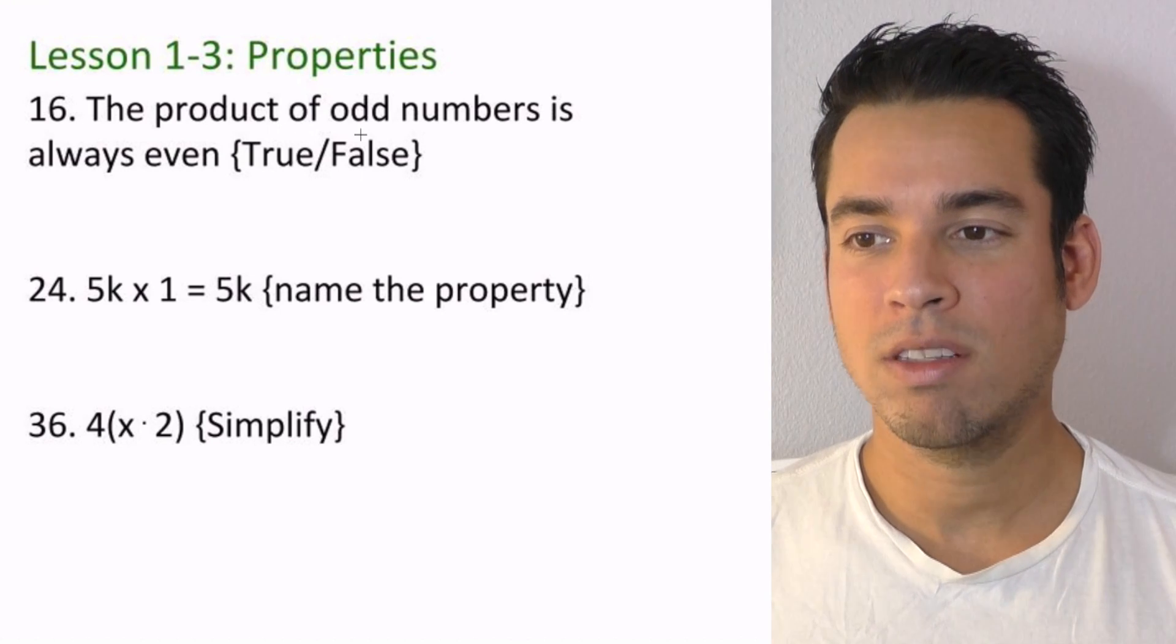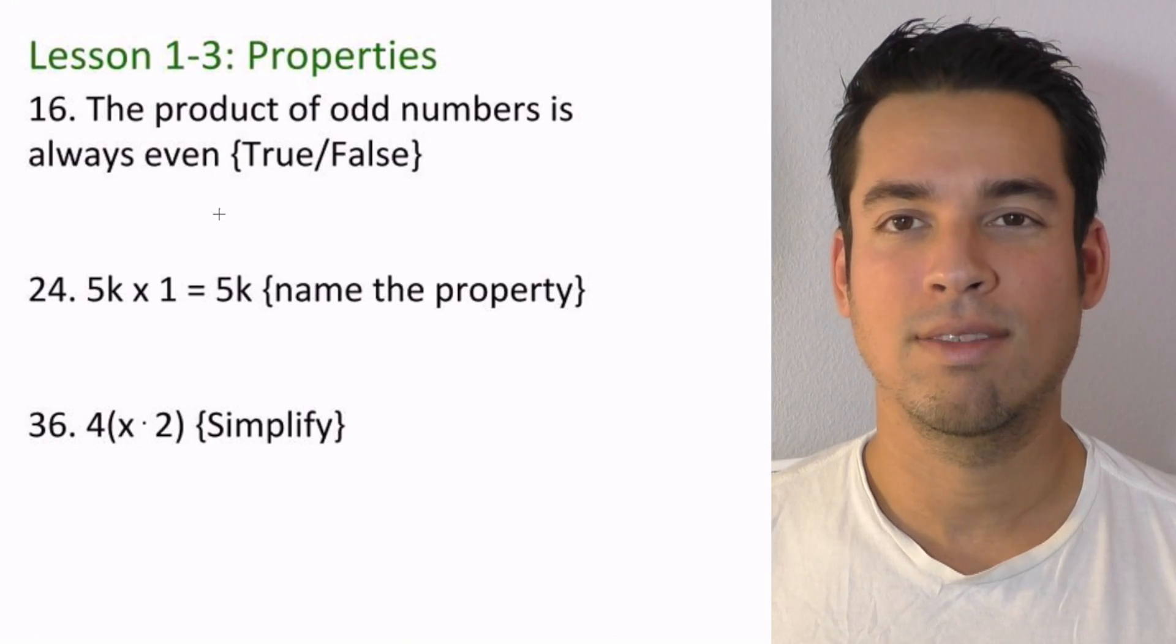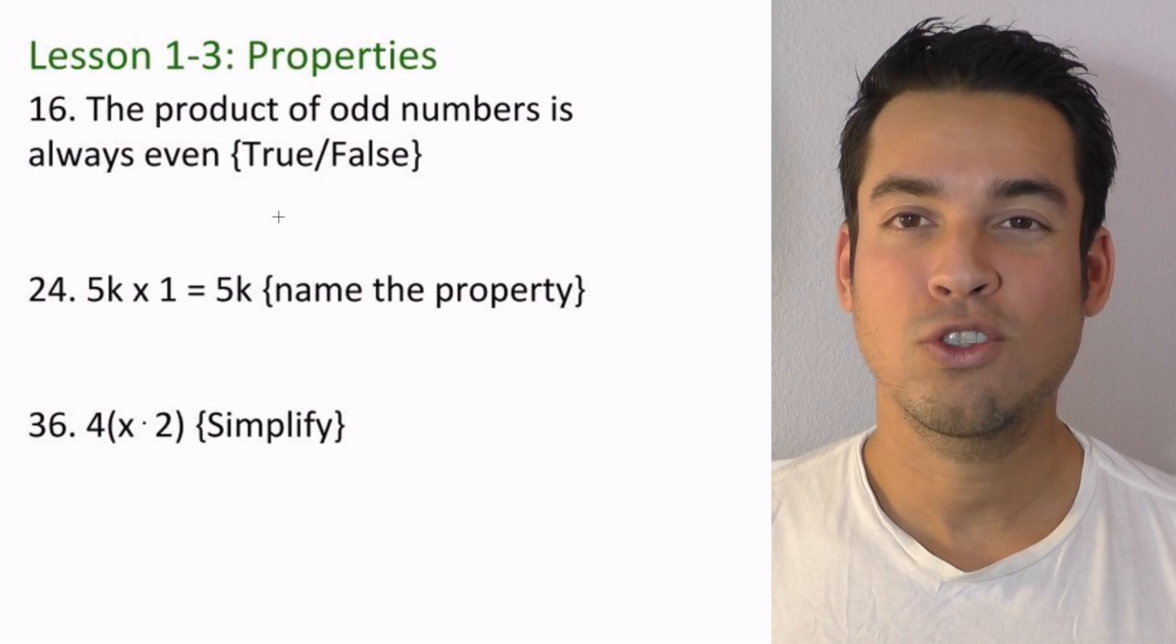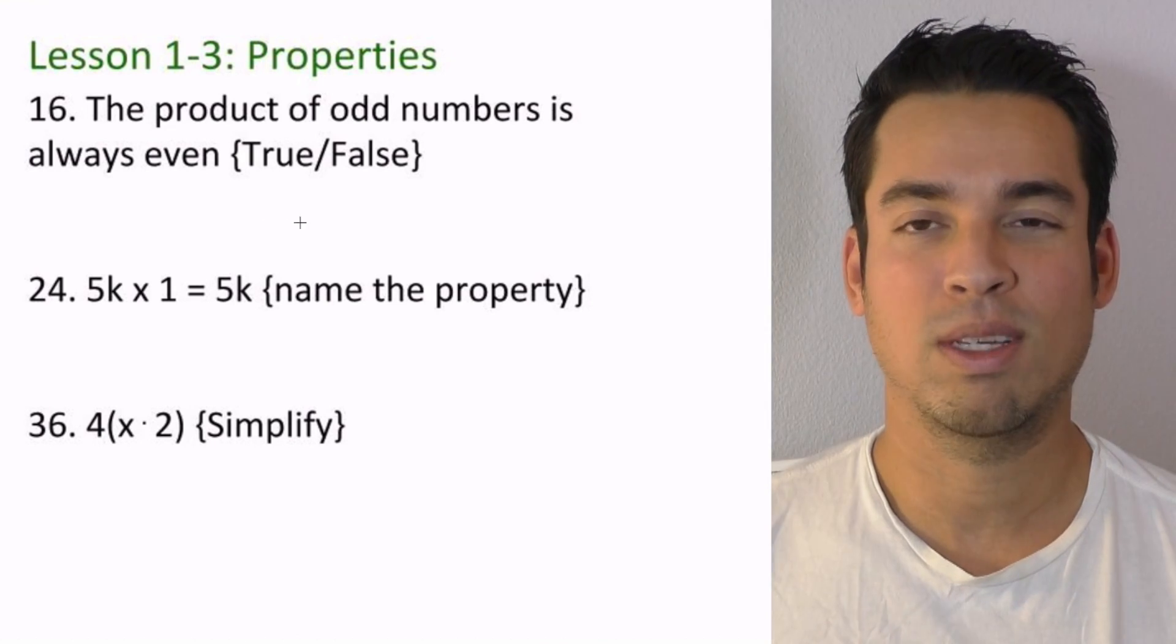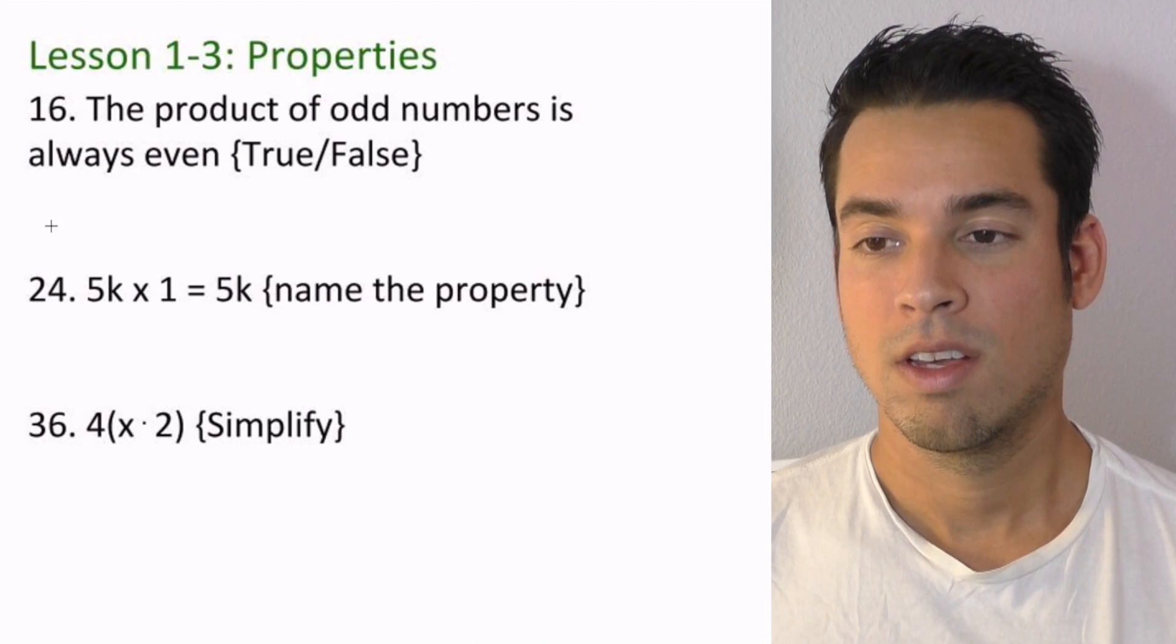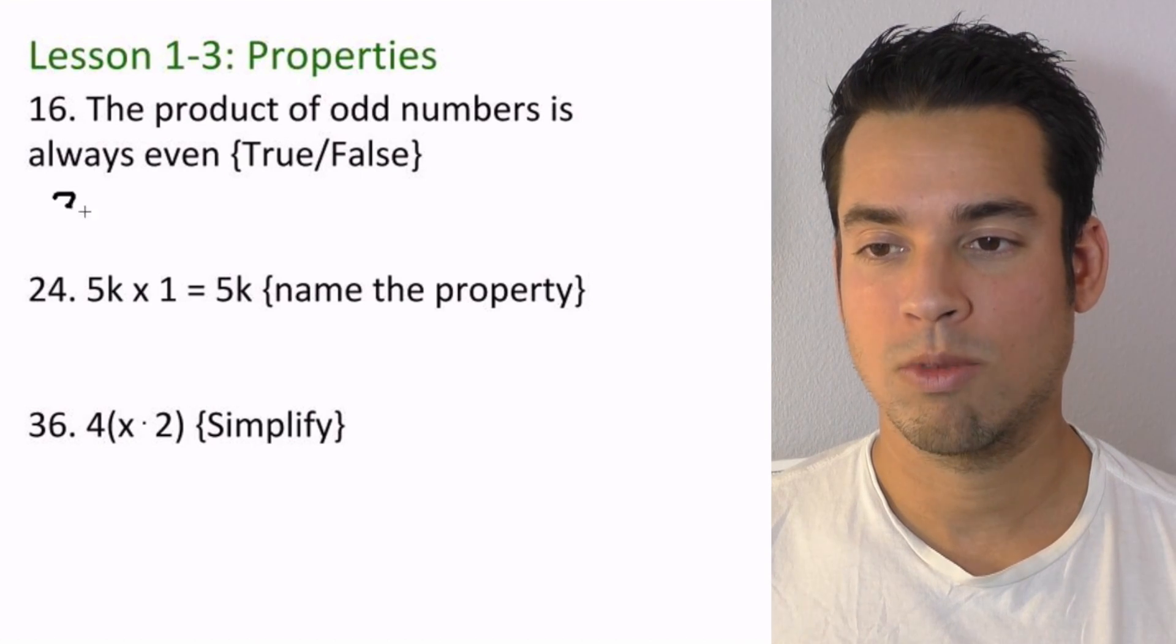What's up guys, welcome to Lesson 1-3: Properties. Okay, let's do it. So first it says the product of odd numbers is always even, true or false. So my strategy in this case is let's just start trying some examples out, see if we can disprove it. That's easy. So let's just think of two odd numbers.